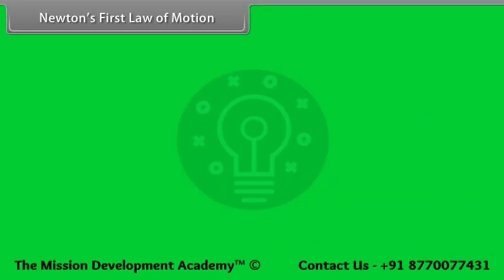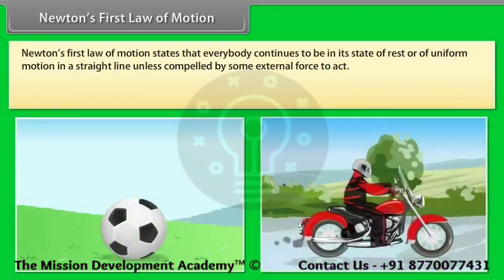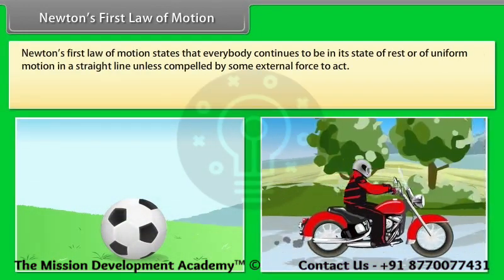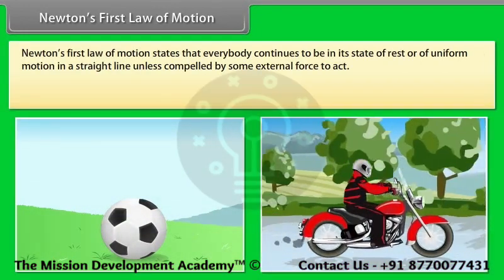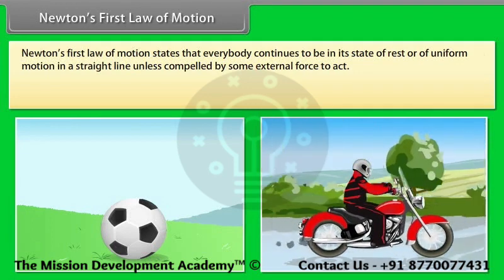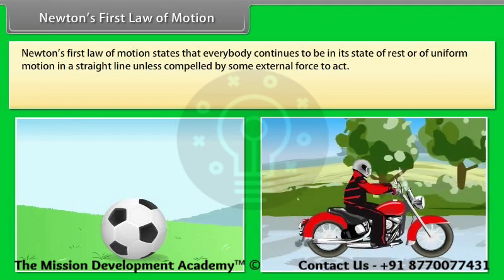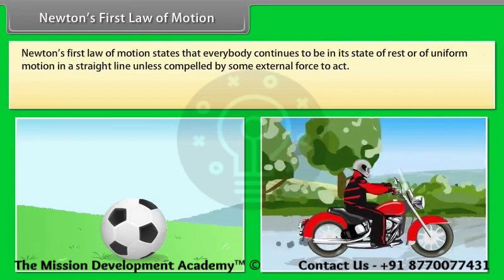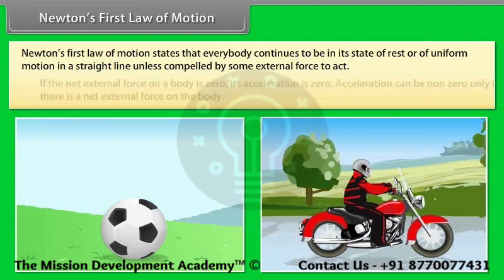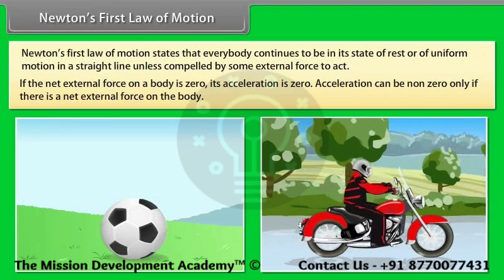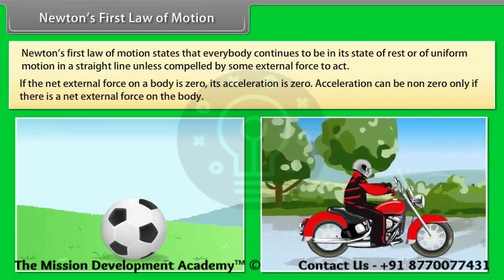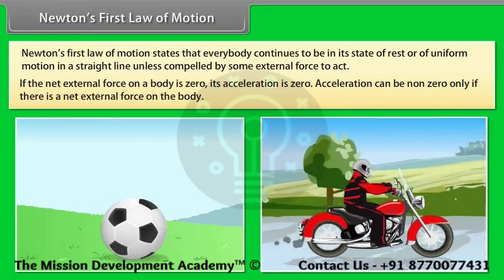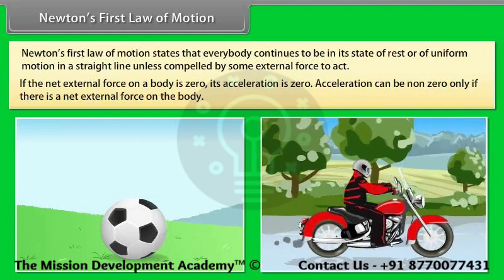Newton's first law of motion states that every body continues to be in its state of rest or of uniform motion in a straight line unless compelled by some external force to act. If the net external force on a body is zero, its acceleration is zero. Acceleration can be non-zero only if there is a net external force on the body.